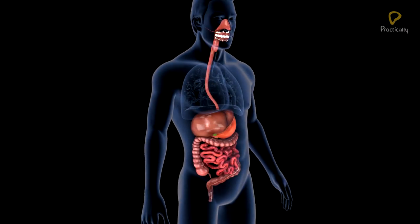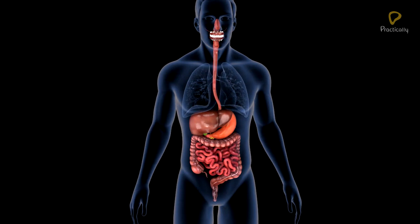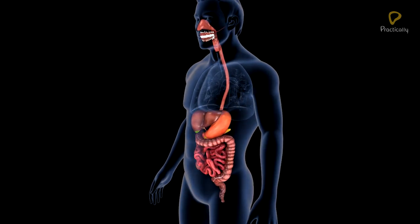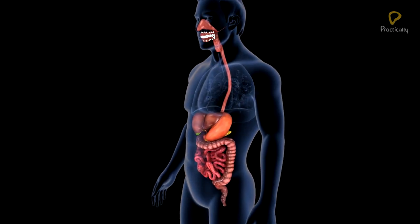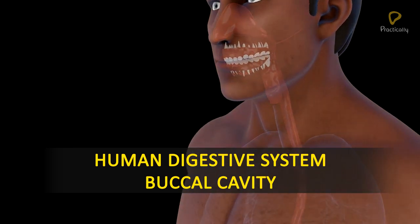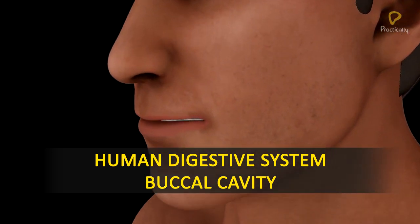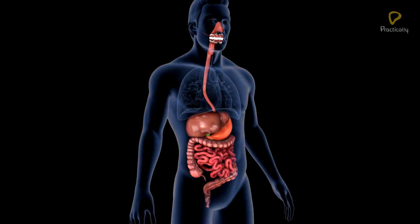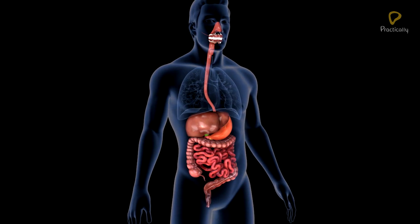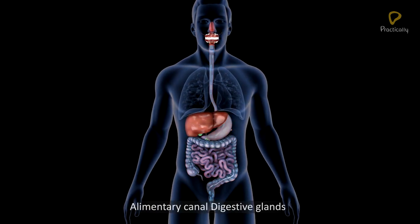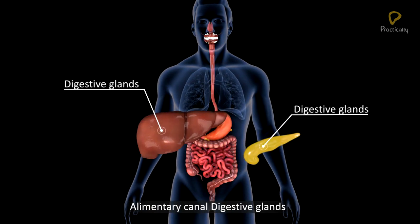Human Digestion and Absorption. The objective is to study about the human digestive system, including the buccal cavity. The human digestive system consists of the alimentary canal and digestive glands.